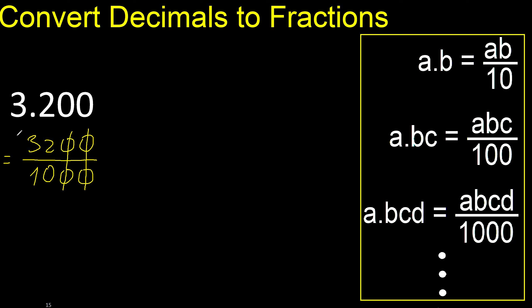Can be simplified because it can be divided by the same number. Divided by 2. 32 divided by 2 is 16. 10 divided by 2 is 5. Finish.